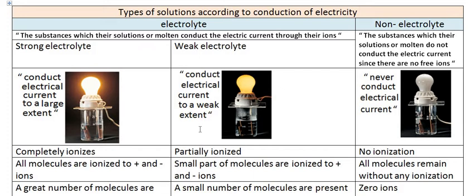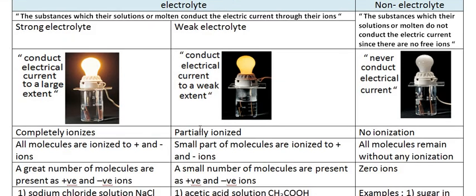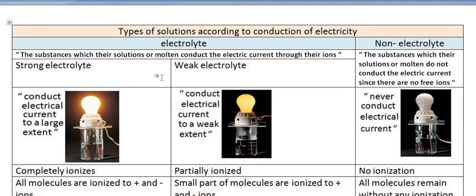The solution which contains a little amount of ions — few ions — is called a weak electrolyte. This weak electrolyte conducts electrical current but only to a weak extent because there is a small amount of ions. Partial dissociation occurs here, which results in a small amount of ions and leads to conduction of electricity to a weak extent.